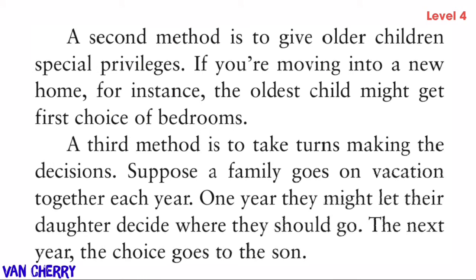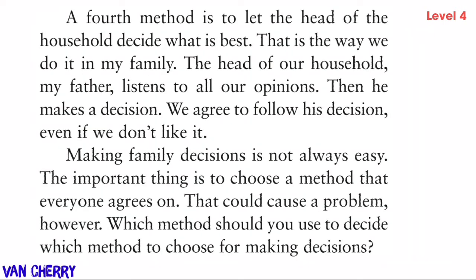A second method is to give older children special privileges — if you're moving into a new home, for instance, the oldest child might get first choice of bedrooms. A third method is to take turns making decisions. Suppose a family goes on vacation each year — one year they let their daughter decide where to go, the next year the choice goes to the son.